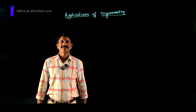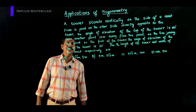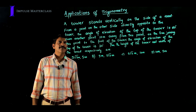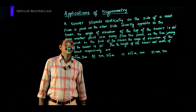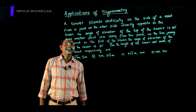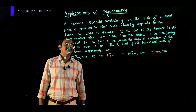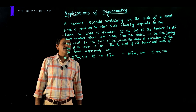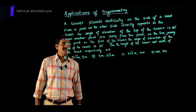Today we are going to discuss applications of trigonometry. Let us have a look at this question. A tower stands vertically on the side of a road. From a point on the other side directly opposite to the tower, the angle of elevation of the top of the tower is 60 degrees. From another point 10 meters away from this point, on the line joining this point to the foot of the tower, the angle of elevation of the top of the tower is 30 degrees.